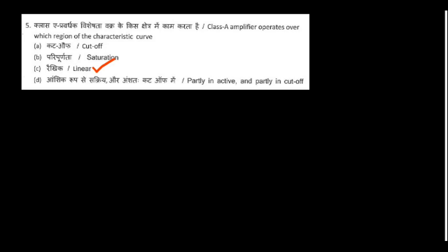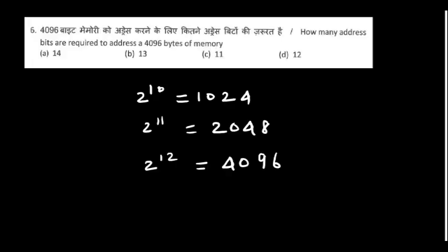How many address bits are required to address 4096 bytes of memory? Each byte, if you want one memory location, is 2 to the power 12, so we need 12 address bits.